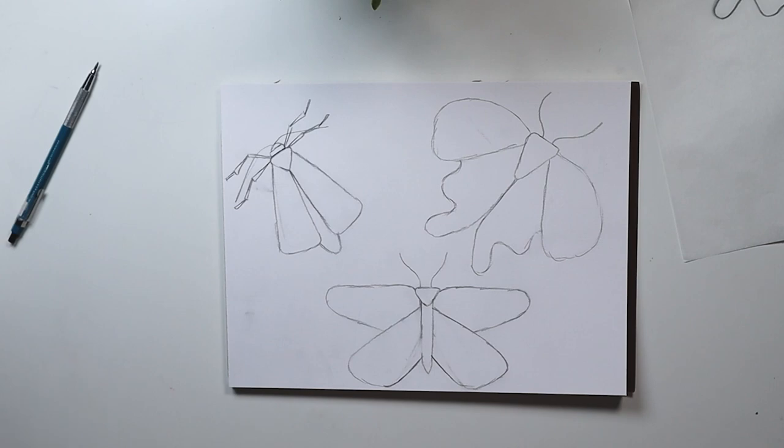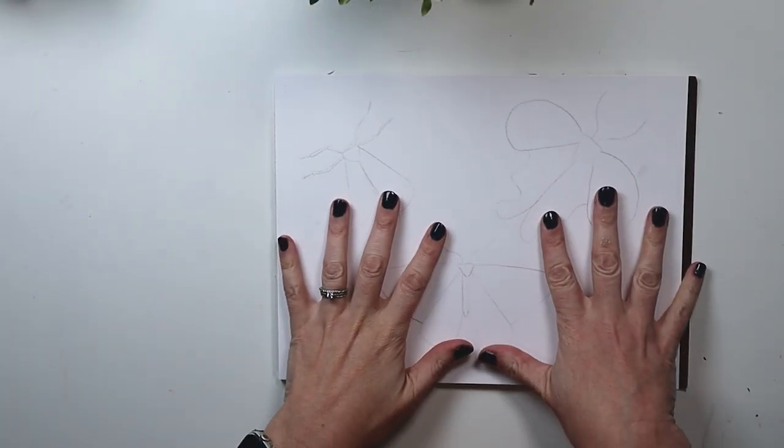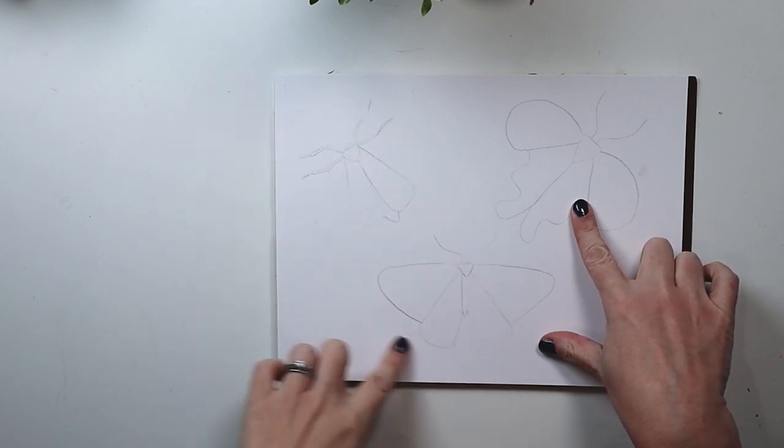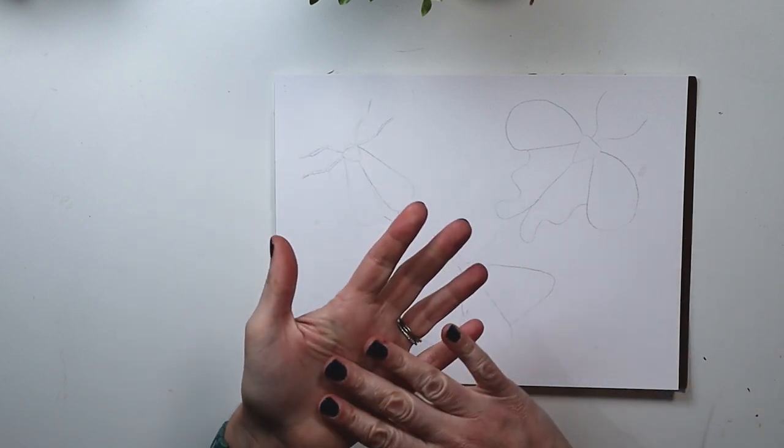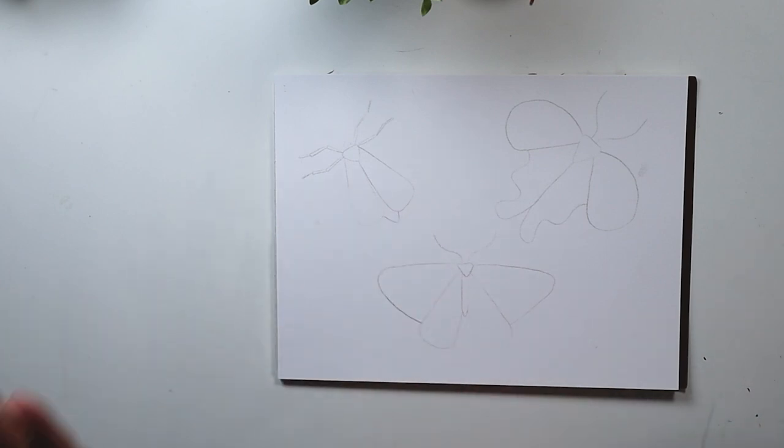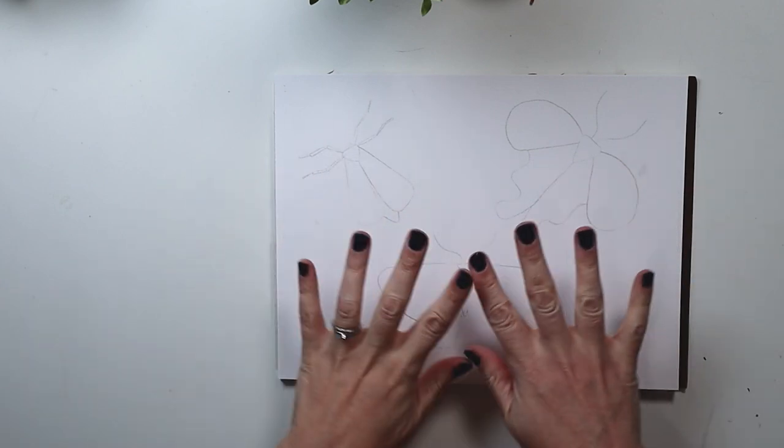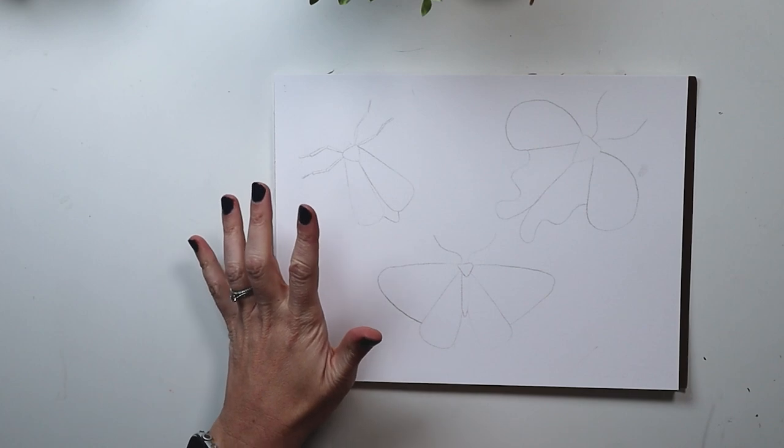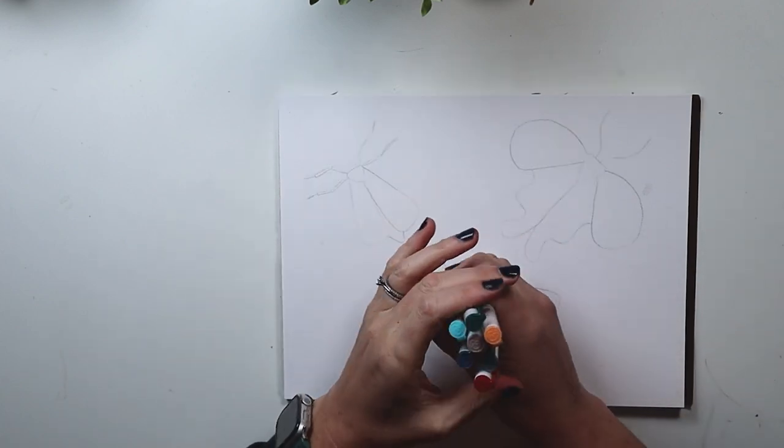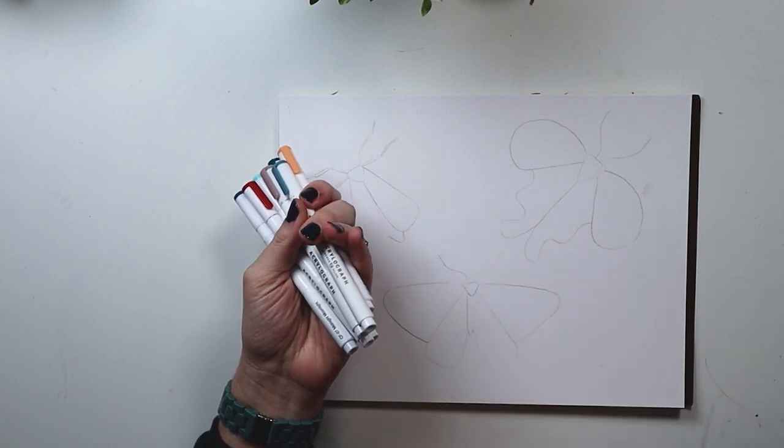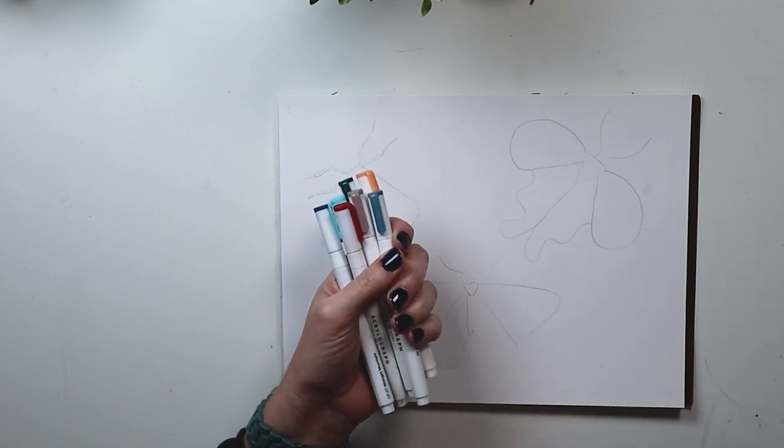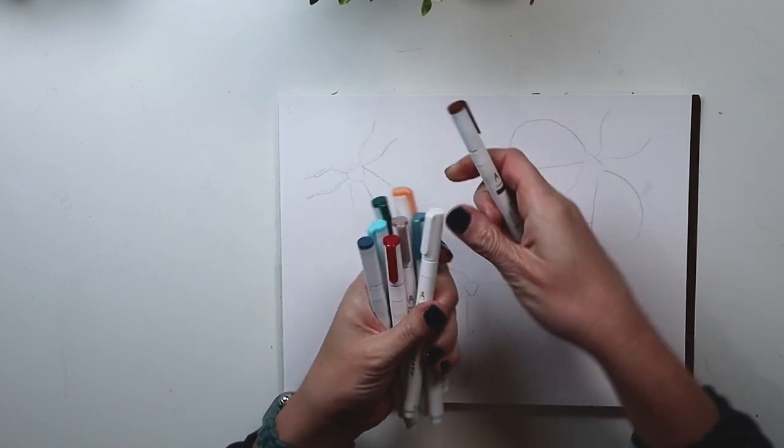So now we're going to get to the fun part, which is coloring. I retraced my moths so that they are a little bit smaller and I didn't want to have the dark pencil lines smudged with my acrylographs. So here we are, we're going to color them in now. I will be using the Cool Fall Acrylograph Set from Archer & Olive as well as a white acrylograph too.